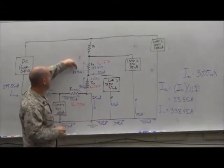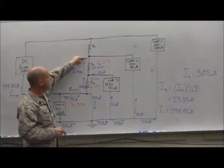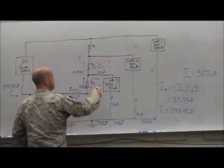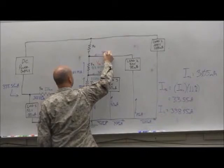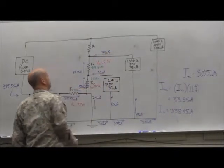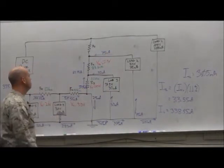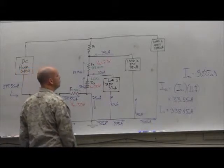Okay, going up into this node, I had 62.55 milliamps. That combines with that 75 milliamps coming from load 2. Giving me what coming across R1?